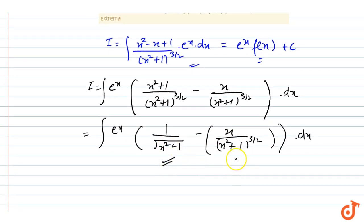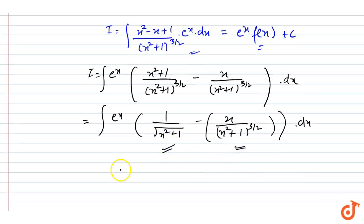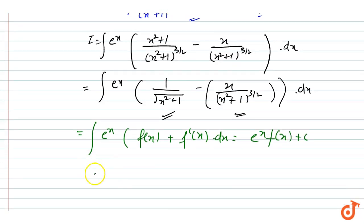We have to get this term in terms of this function. So the integration we have here equals e^x times f(x) plus c. Then we have integration e^x, f(x) is equal to 1 upon under root (x² + 1) plus c.